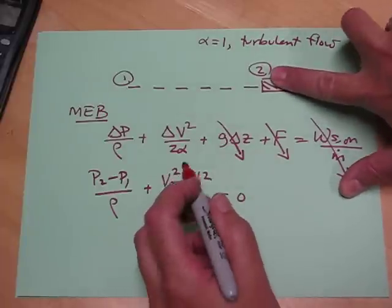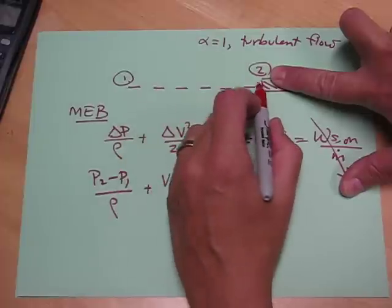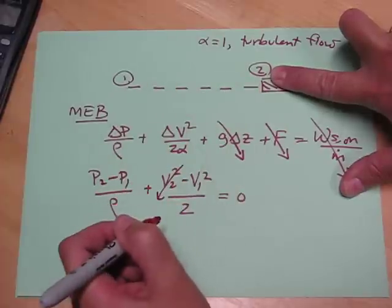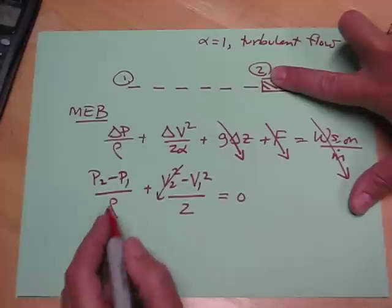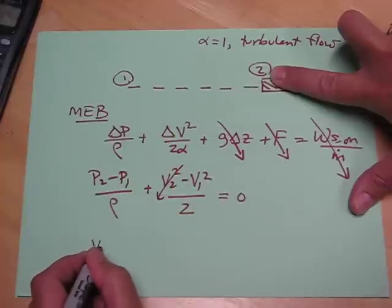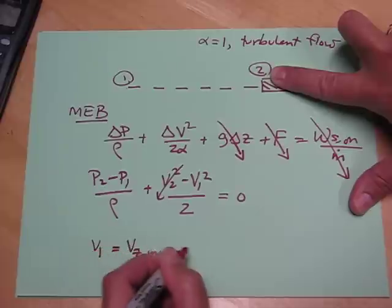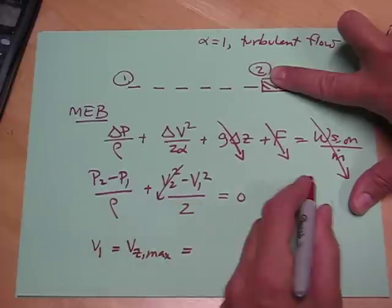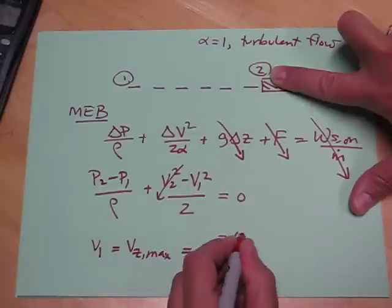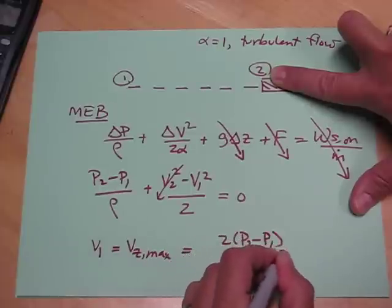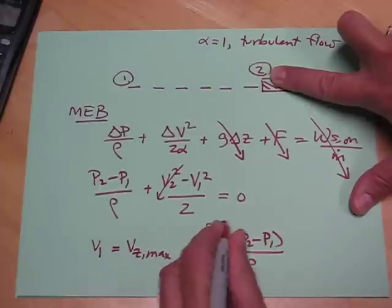Now at point 2 we said that this streamline decelerates to 0, so V2 is 0, and so we can solve for the velocity. We're looking for V1. So V1, which is equal to the VZ max that we're looking for, is equal to, bring it over here, 2 times P2 minus P1 over rho, quantity square root.